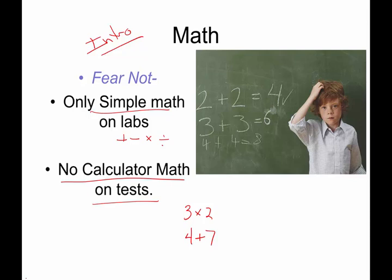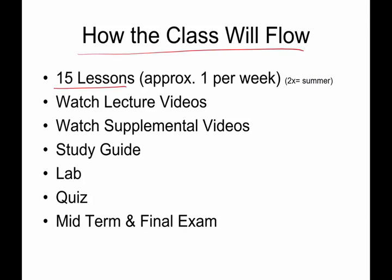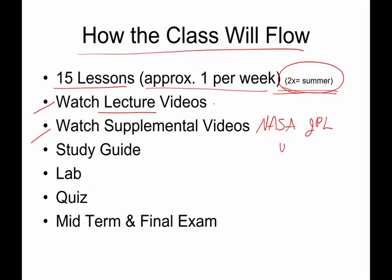How is this class going to flow? We have 15 separate lessons, and that means we're going to do approximately one per week. If you happen to be taking this in a summer school class, summer school is twice as fast, so you're going to be doing two lessons per week. For every lesson, there are some videos made by me, your instructor, that I'm going to ask you to watch. That's how you're going to get the lectures and the notes. There are some supplemental videos that are produced by outside sources — NASA, the Jet Propulsion Laboratory, TV shows like the Universe series — and I am going to ask you to watch some of these to illustrate a lot of the cool stuff in astronomy that is a lot prettier and more interesting in 3D than me just writing on a tablet.